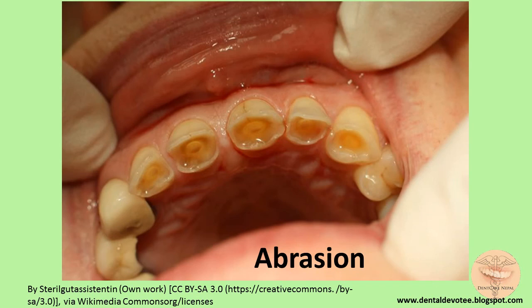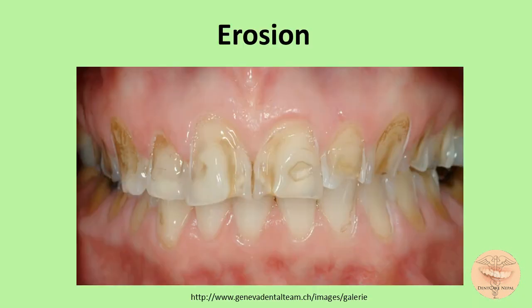Tailors, carpenters, hairdressers, and shoemakers who use their teeth to hold nails and pins also develop abrasions. Erosion is the progressive irreversible loss of hard dental tissues by some chemical processes that do not involve bacterial action.